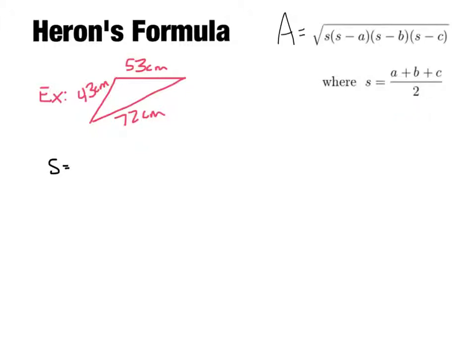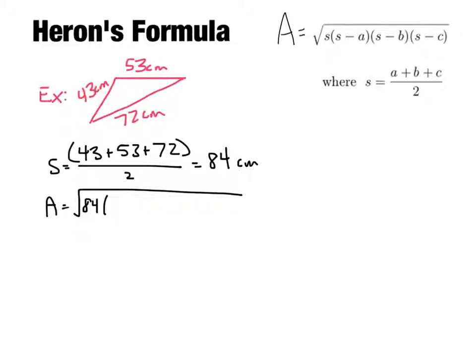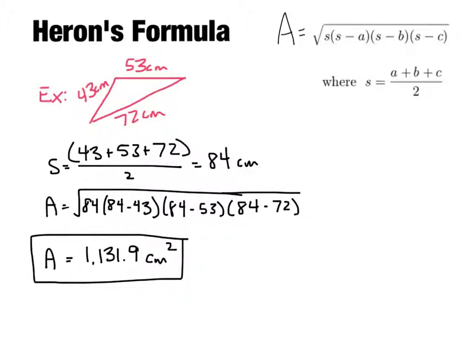So S is equal to the sum of the three sides, 43 plus 53 plus 72, all divided by 2. So the S that we're using will be 84 centimeters. And then now we can plug it into our area formula. Area equals the square root of 84 times 84 minus 43 times 84 minus 53 times 84 minus 72. So after calculating that, we find that the area is 1,131.9 centimeters squared. Don't forget that the area is always given in units squared.